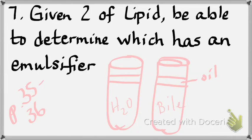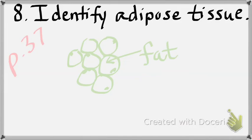That same day we looked at adipose on page 37. What does adipose look like? It looks like bubbles — and the bubbles are full of fat. Bile is an emulsifier: it breaks oil into small droplets and makes the oil more polar so it dissolves in water better. Bile assists with your digestion.